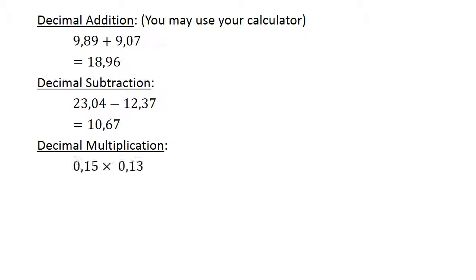Decimal multiplication. 0.15 times 0.13 equals 0.0195.